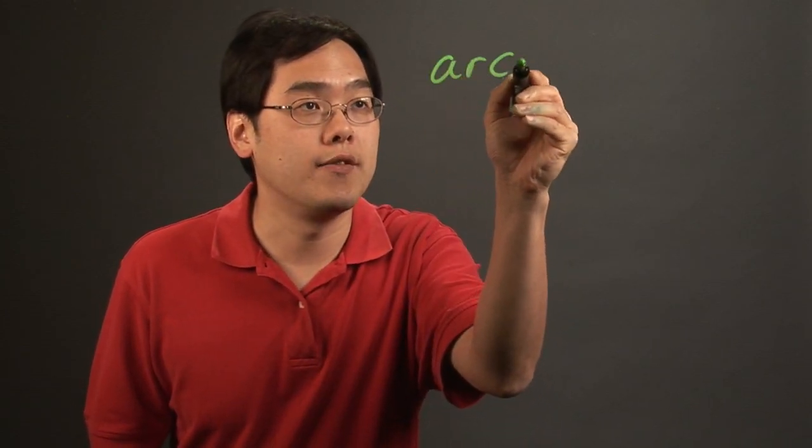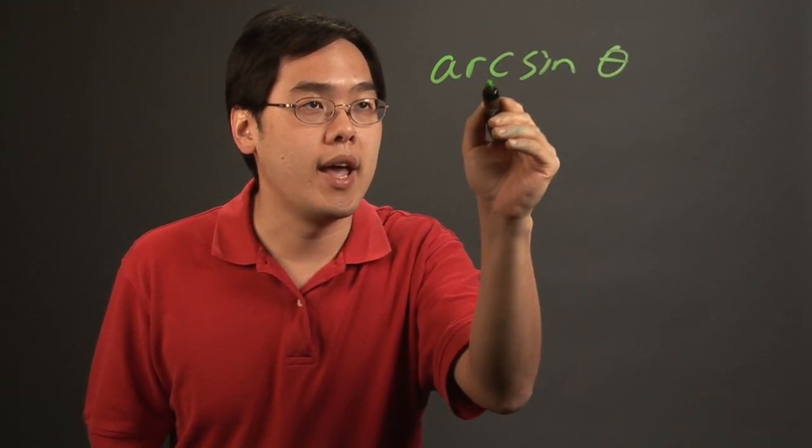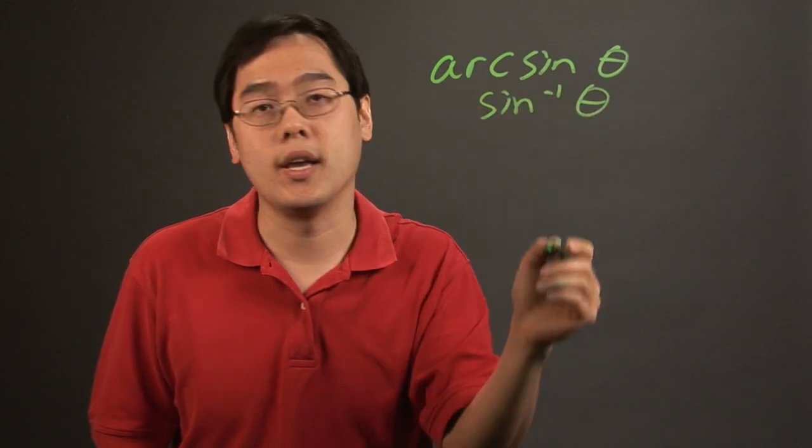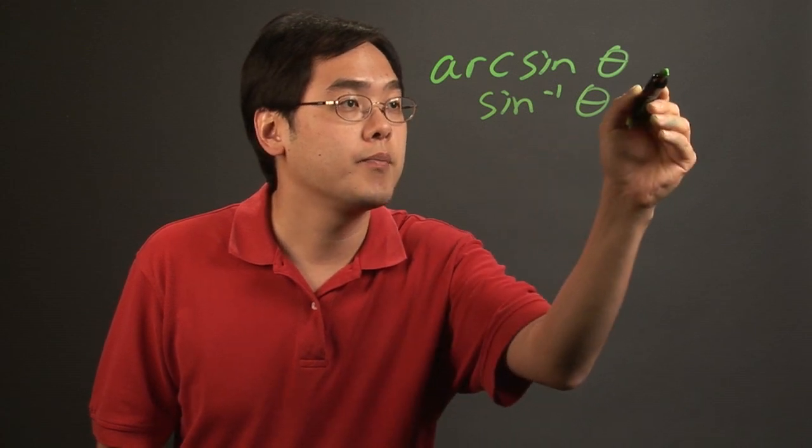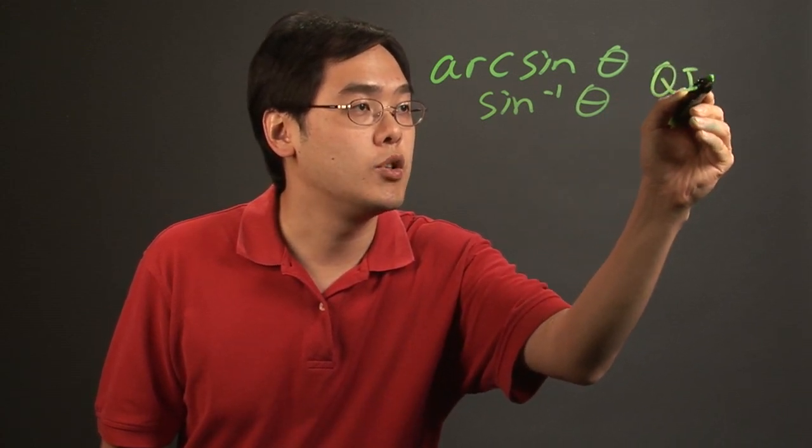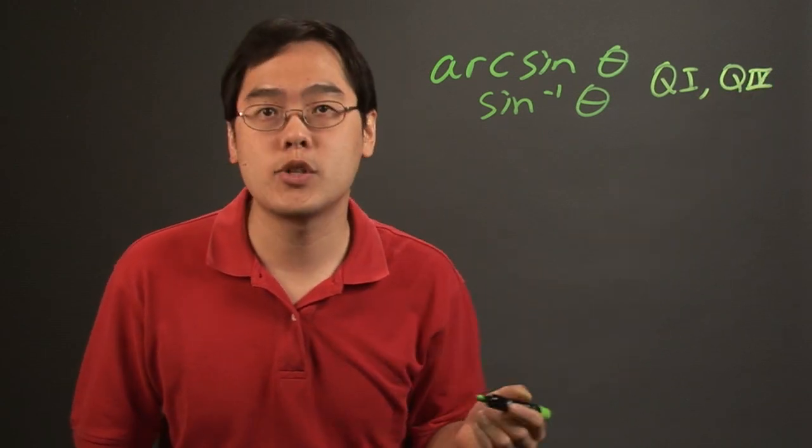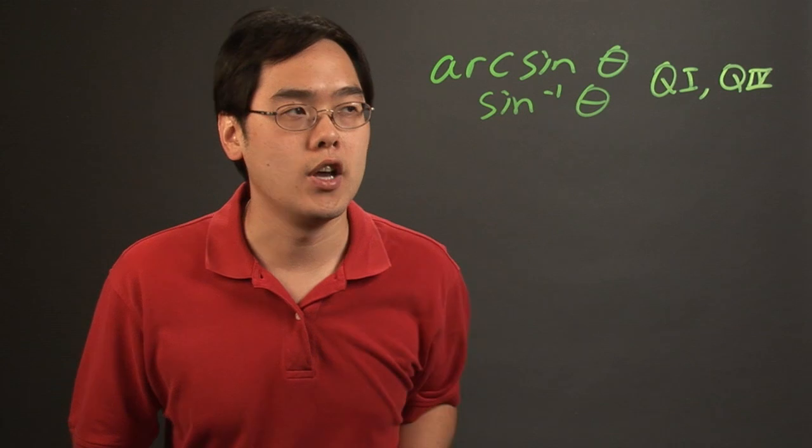So if you look at the arc sine function, or it's also known as the sine inverse of a function, they're both the same thing. The one thing you want to consider is the arc sine function is defined only on quadrants 1 and 4. That means quadrants 2 and 3 are not covered, they're not defined over the arc sine function.